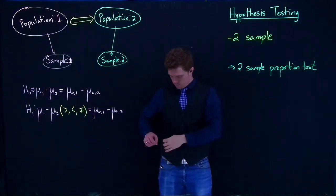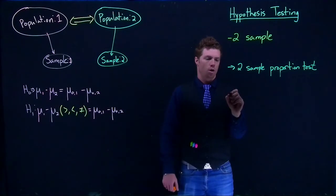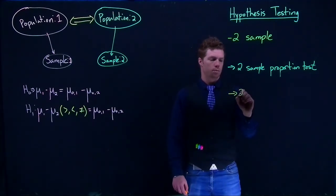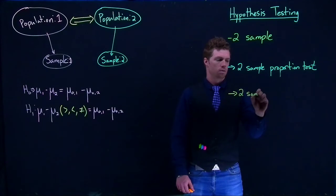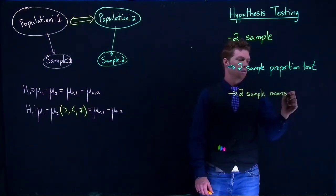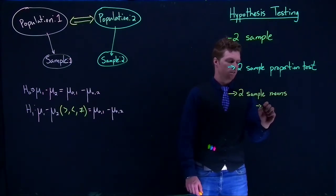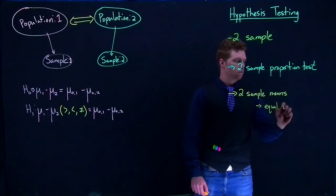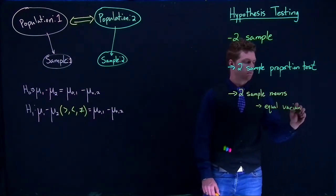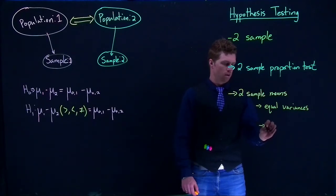We've got a couple options for our means. We can do two-sample means, one where they have equal variances and one where they have unequal variances.